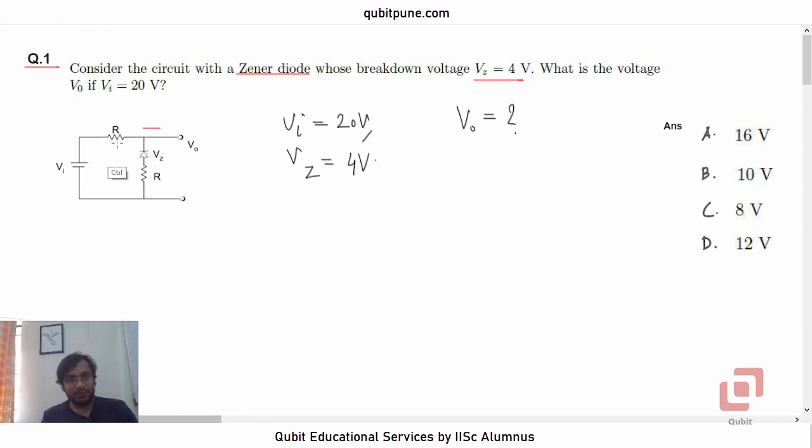Whatever current that flows through this resistance R, the same current is going to flow through the zener diode and through this resistance.